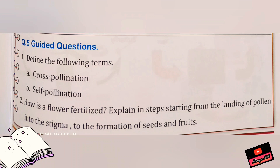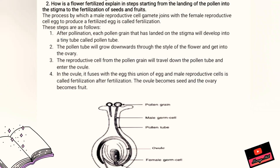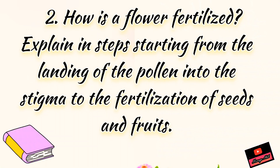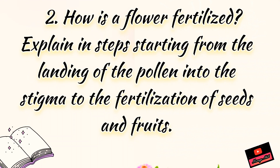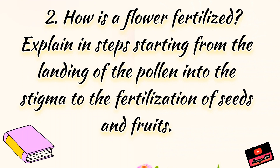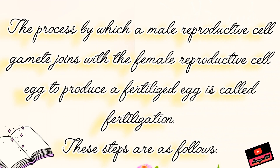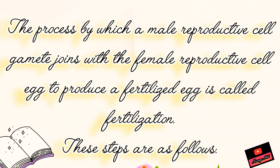Now we have to do question number 5, part 2. How is a flower fertilized? Get your pencils and notebooks ready and write this question: How is a flower fertilized? Explain the steps starting from the landing of the pollen on the stigma to the fertilization and formation of seeds and fruits. For the first point, write: The process by which a male reproductive cell gamete joins with a female reproductive cell egg to produce a fertilized egg is called fertilization.